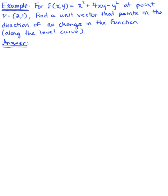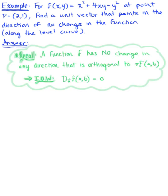For the given function at the given point, find a unit vector that points in the direction of no change in the function along the level curve. To get us started, let's recall that a function f has no change in any direction that is orthogonal to the gradient vector at a given point (a, b) — in other words, where the directional derivative of the function at that point equals 0.